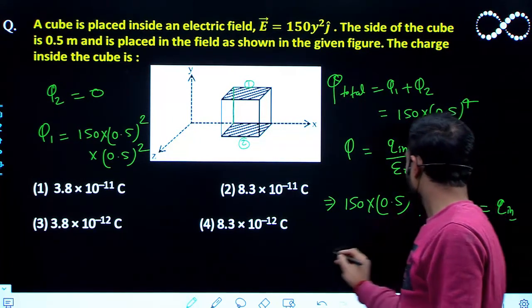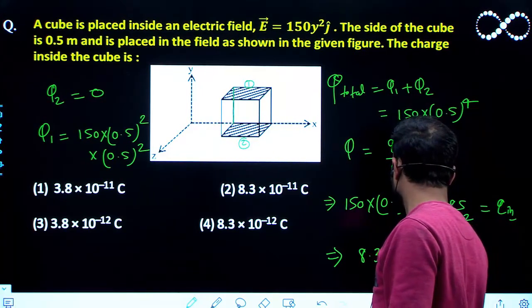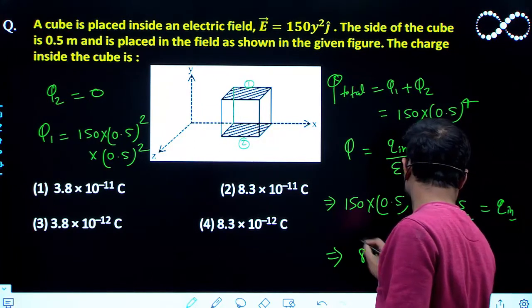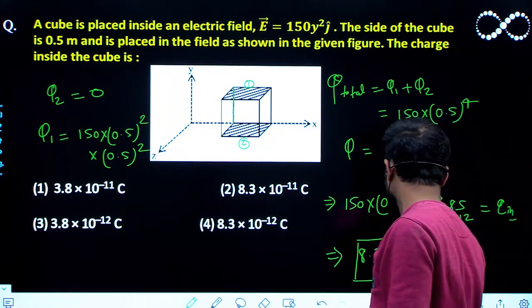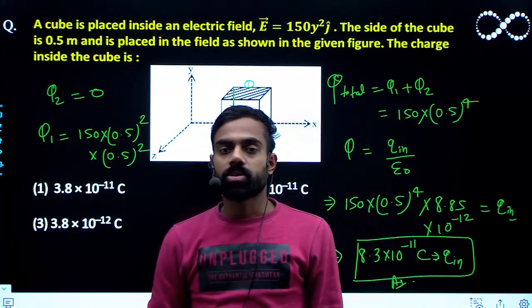So if you will solve this then you will get 8.3 into 10 raised to power minus 11 Coulomb. That is the Q interior. So this will be the answer. Okay friends, I hope you understood this question.